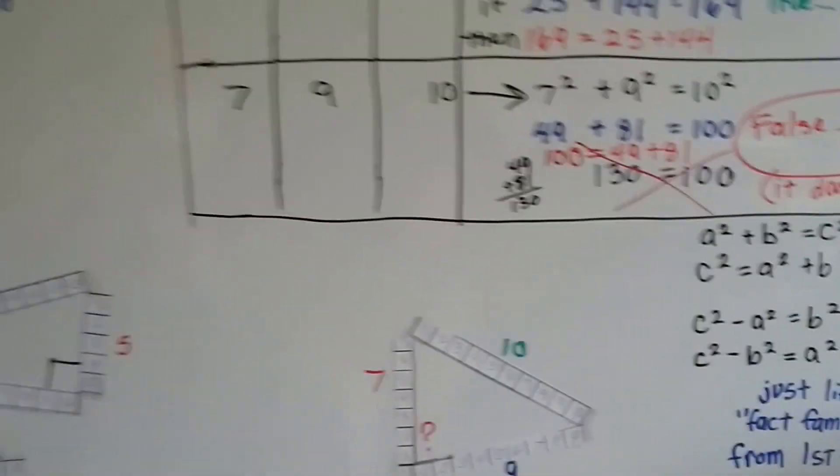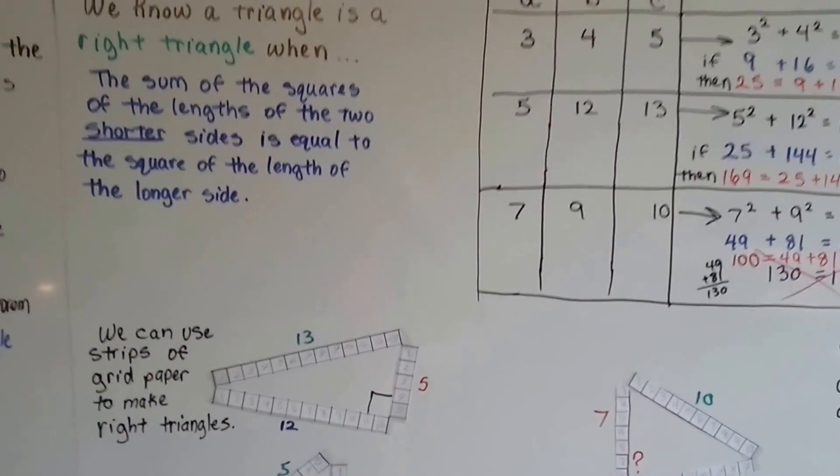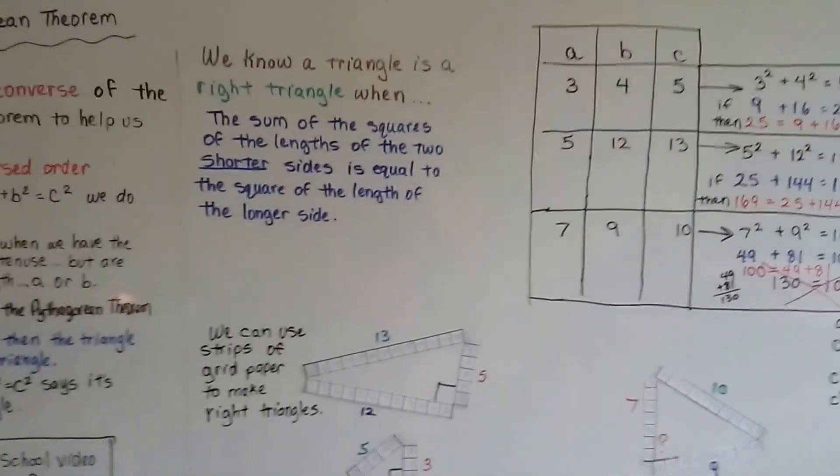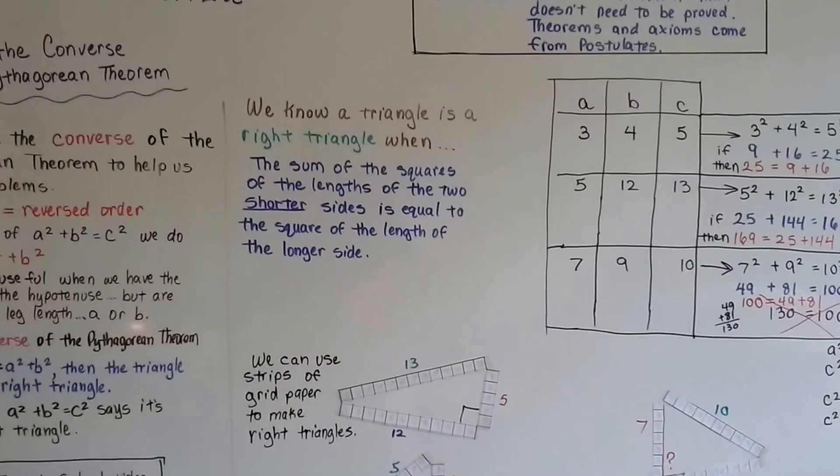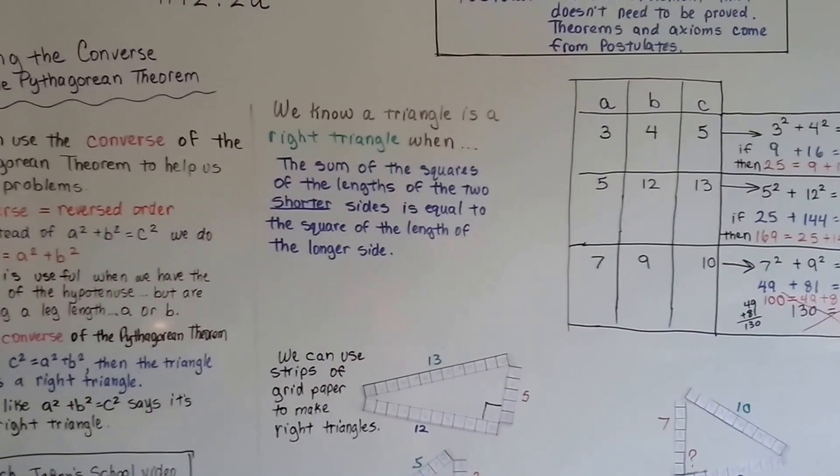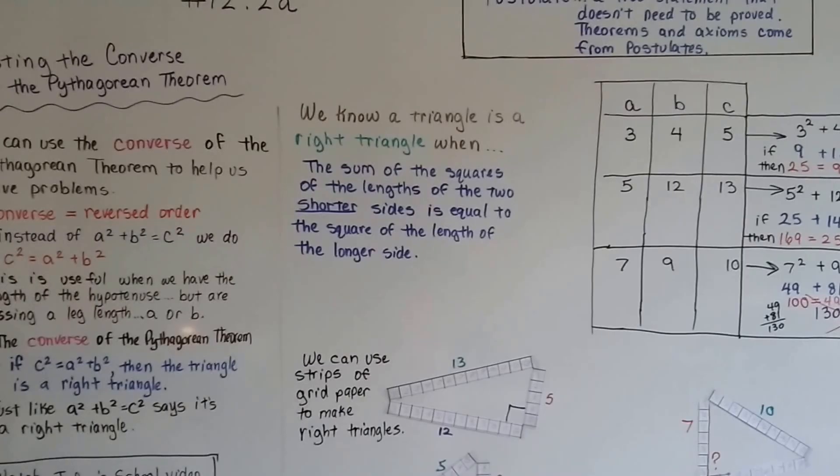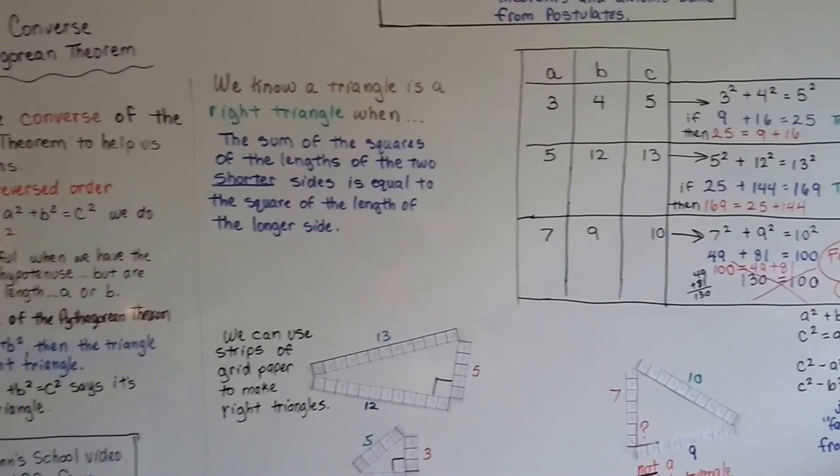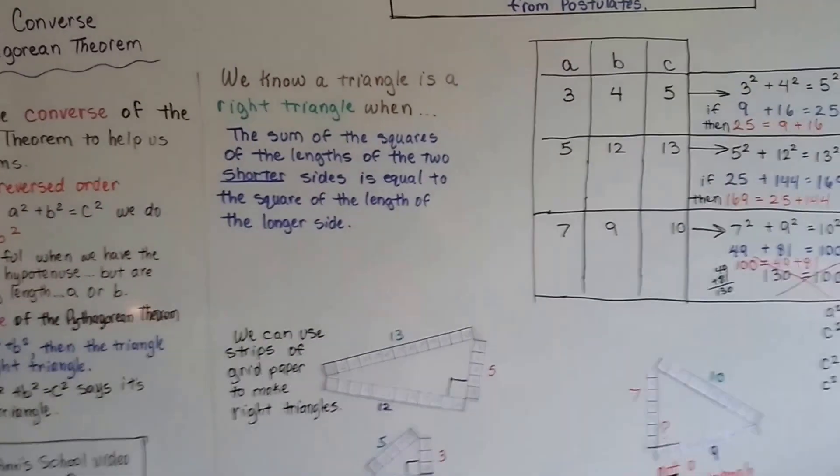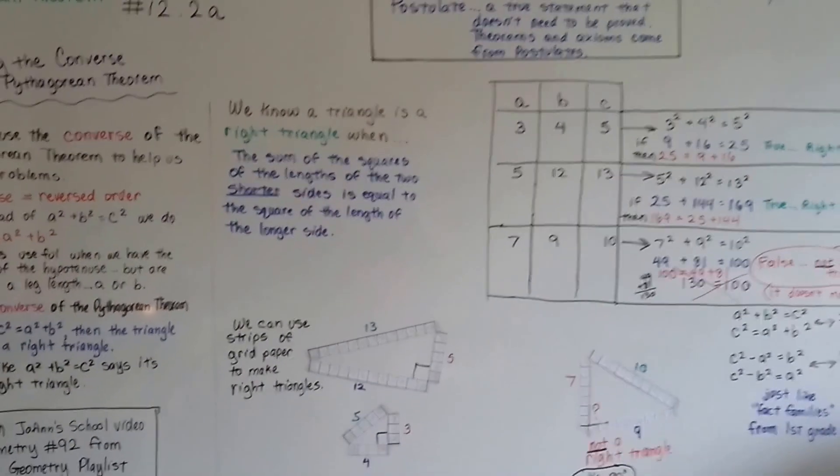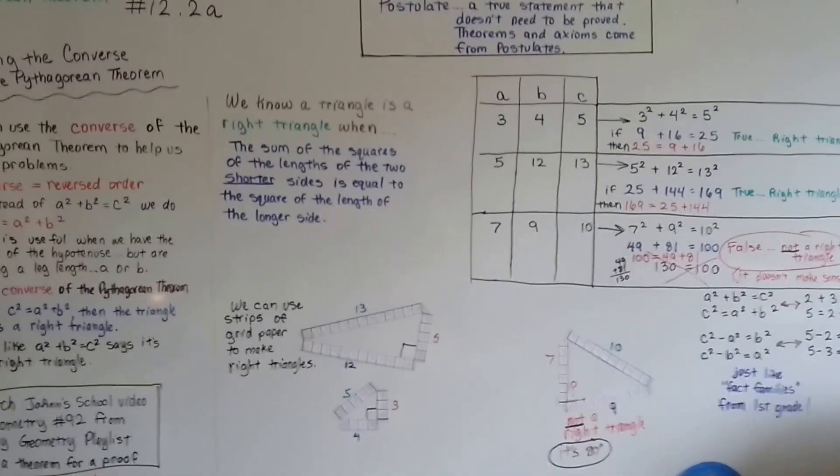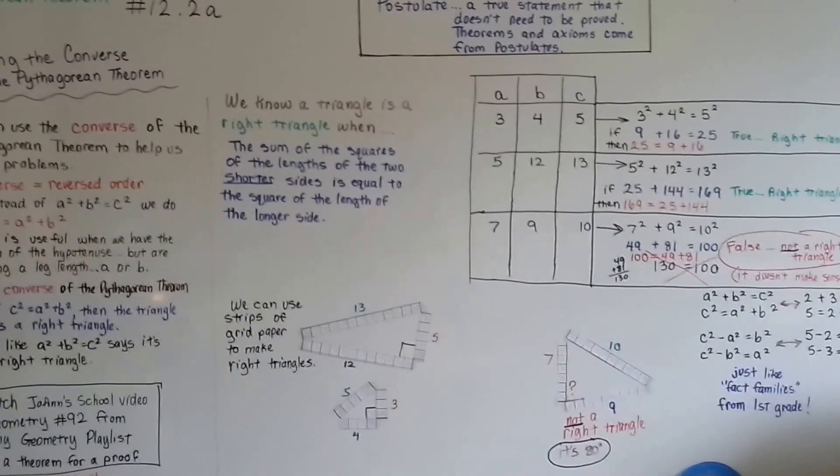So, that is testing the converse of the Pythagorean theorem, and I really hope this was helpful. And we're going to move on to the next video, 12.2b. We're going to talk about identifying a right triangle. So, more about right triangles, and I'll see you next video. Keep your chin up. I hope you're doing well. Bye bye.